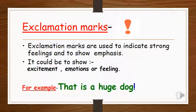Our next punctuation mark is exclamation marks. Exclamation marks are used to indicate strong feelings and to show emphasis. It could be to show excitement, emotions or feelings. For example, if you are excited to see a huge dog, so you will at once say, that is a huge dog! And the exclamation mark will come at the end of the sentence.